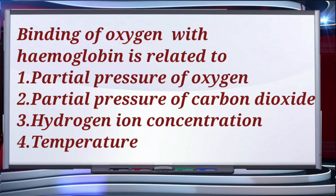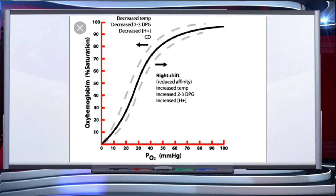Binding of oxygen with hemoglobin is related to partial pressure of oxygen and carbon dioxide, hydrogen ion concentration, and temperature. A sigmoid curve is obtained when percentage saturation of hemoglobin with oxygen is plotted against partial pressure of oxygen. This curve is called the oxygen dissociation curve.